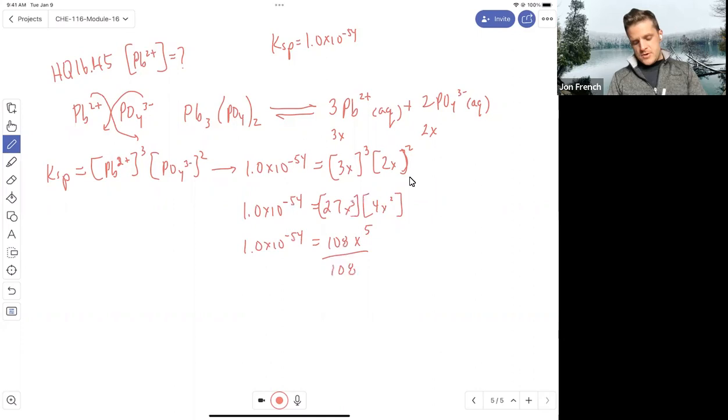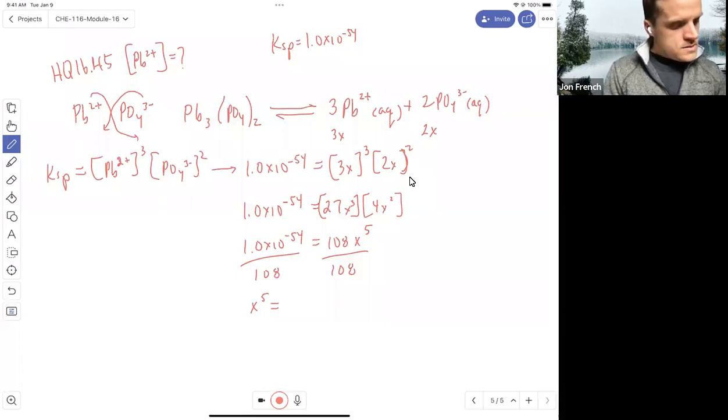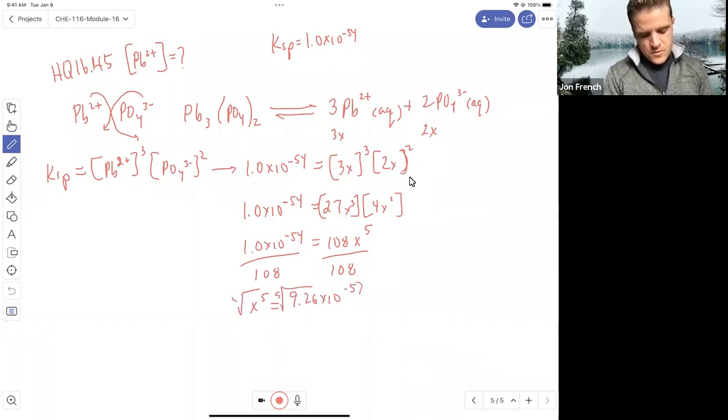Divide both sides by 108, and we get X to the fifth equals 1 times 10 to the minus 54 divided by 108. Tiny number, the minus 57. Take the fifth root on both of those, and I get X equals 6.21 times 10 to the minus 12.